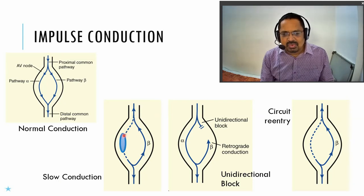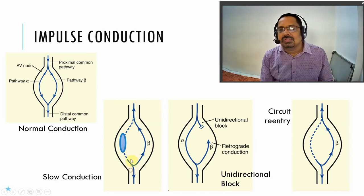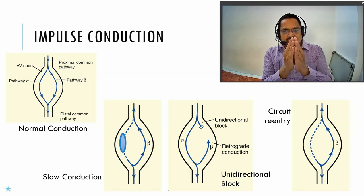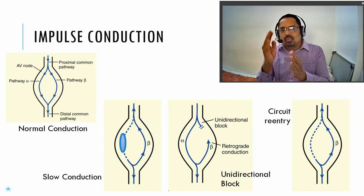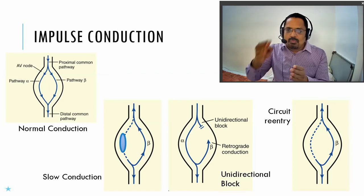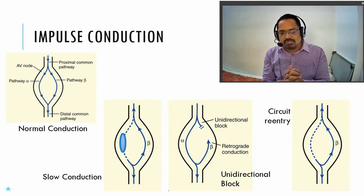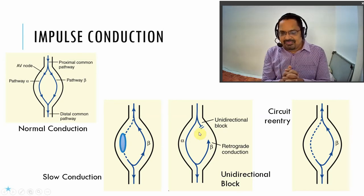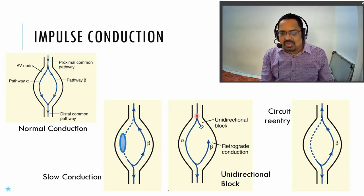The velocity between these two impulses does not match. Normally both go together as one, but here one goes and the second follows later or goes back again. In the third type — unidirectional block — there is slowing of the signal in one path and complete blocking in another. The nerve impulse comes as one: one goes through the alpha pathway and the second bounces back from the blocked beta pathway.